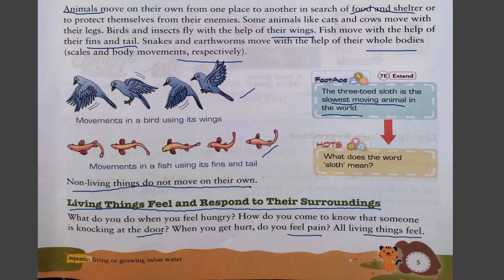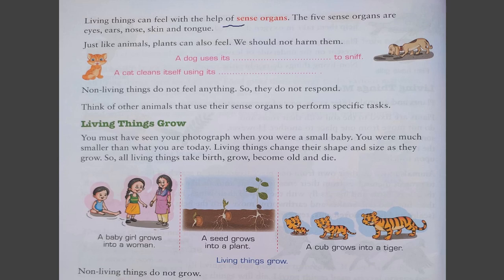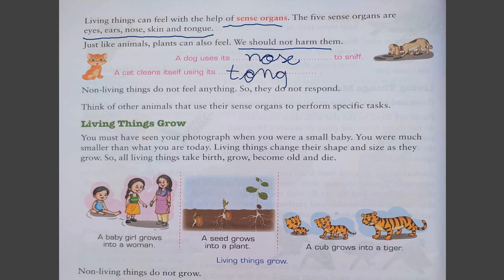Living things can feel and respond to their surroundings with the help of sense organs. The five sense organs are eyes, ears, nose, skin, and tongue. Just like animals, plants can also feel — we should not harm them. A dog uses its nose to sniff, and a cat cleans itself using its tongue. Non-living things like a table, chair, or bed do not feel or respond to any touch.